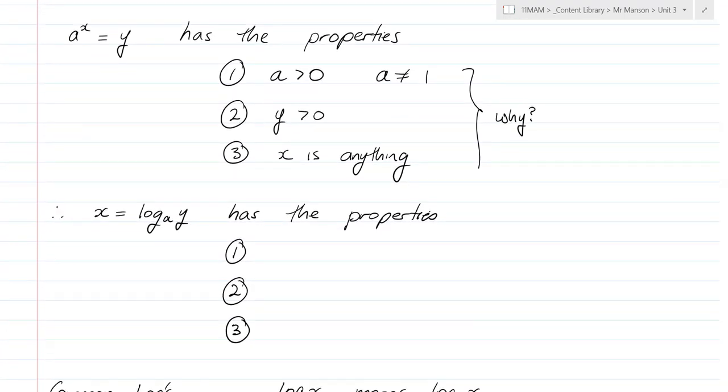So a couple of properties of logs. a^x equals y has the following properties: a is greater than 0, a can't be 0, it doesn't make sense, a can't really be 1 either, because then 1 to the power of x just equals 1, so it's not an exponential function then.